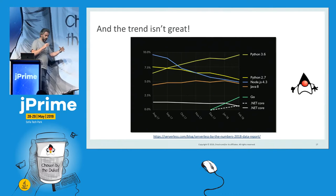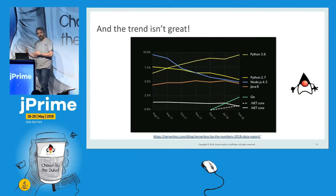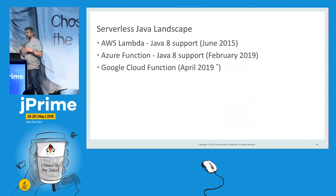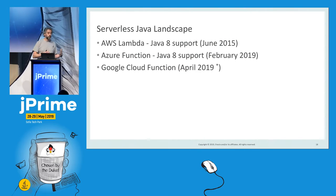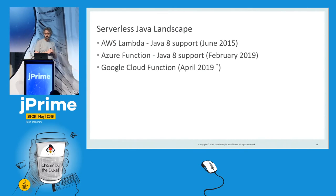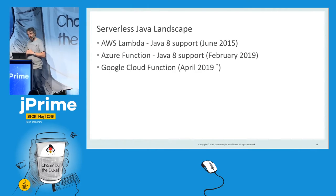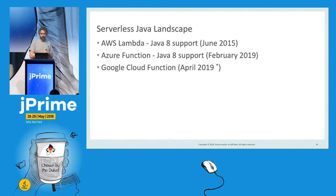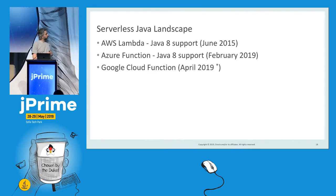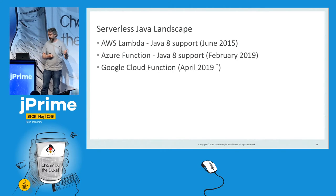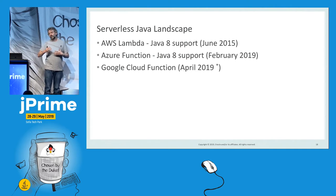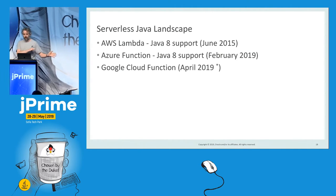How can we explain this? On one hand, we have a very widely used programming language, and on the other, a new emerging space where it's not popular. Looking at the historical FaaS landscape: Amazon has been supporting Java 8 since June 2015 — they're doing a good job. Microsoft only started supporting Java since February this year, so it's pretty new. And Google Cloud Functions is only supporting Java since April — last month — and it's Java 8 in alpha, not even GA. The fact that major FaaS platforms, except Amazon, don't have a solid Java story may partly explain Java's low adoption.